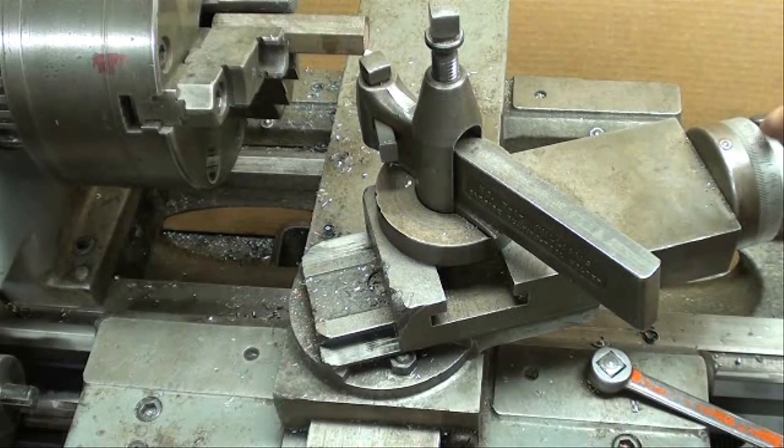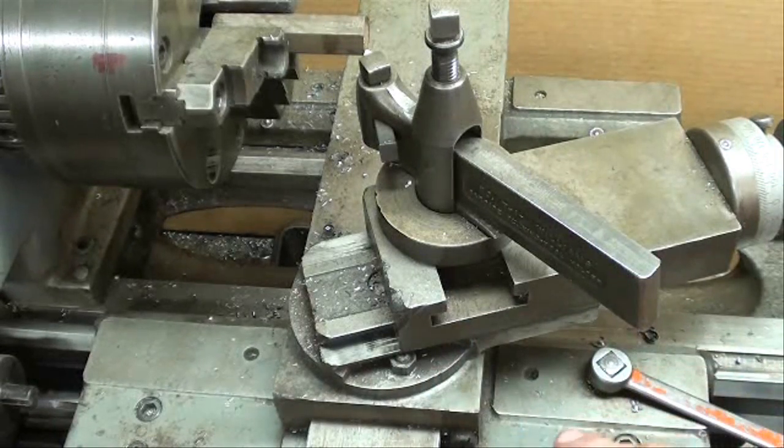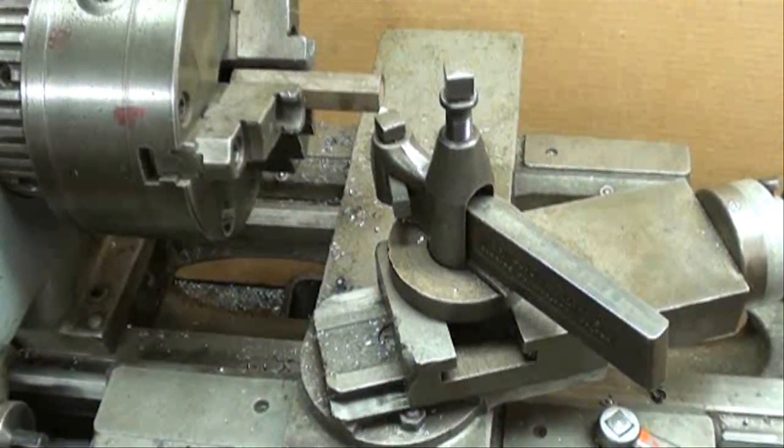I'm going to zoom in in a moment and you're not going to see these other controls. We're set at about 500 RPM. Now this is going to be an interrupted cut.